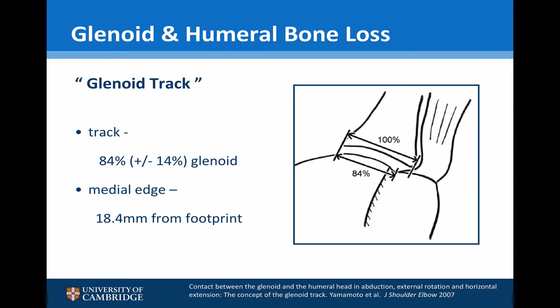When the shoulder is fully abducted and externally rotated, the footprint is in contact with the posterior 16% of the glenoid, meaning the length of humeral head in contact with the glenoid accounts for 84% of the glenoid width. This is essentially the glenoid tract.